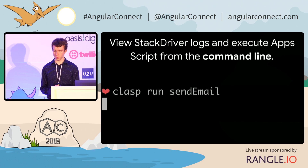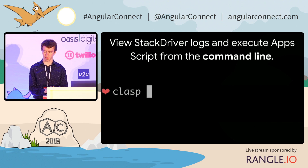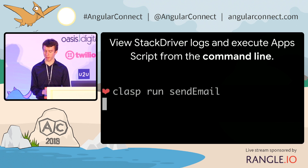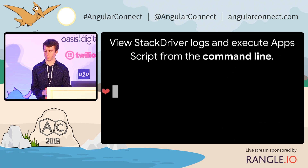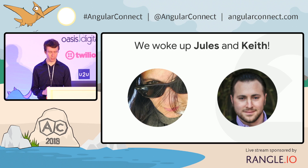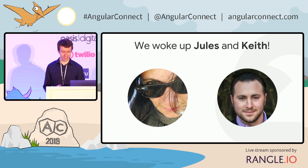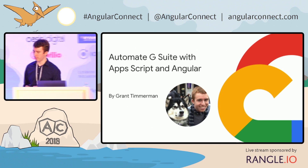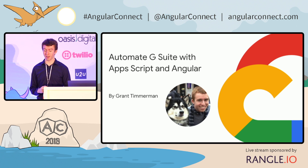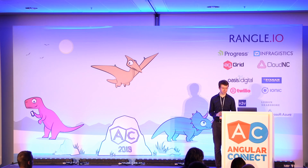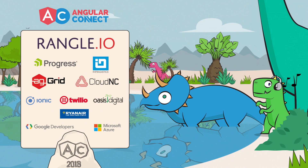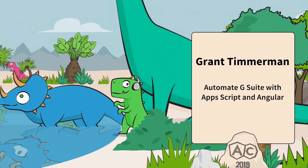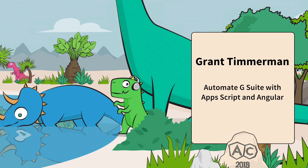Once you are able to send emails, you can execute functions from the command line and even view Stackdriver logs. In summary, I showed you how you can use Google Sheets and create custom side menus in the 300 pixels on the side of Google Sheets, and build a custom web application that connects to APIs like YouTube's API, GitHub's API, etc. That's Automate G Suite with Apps Script and Angular. My name is Grant Timmerman — feel free to ask any questions, and thank you so much.